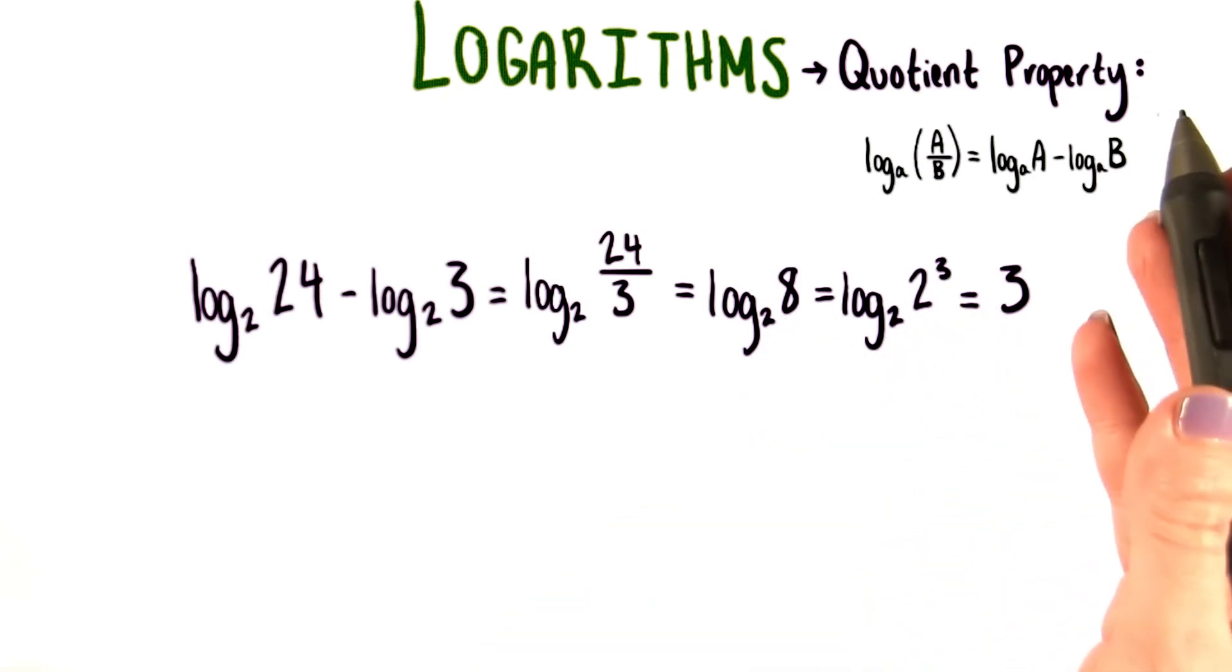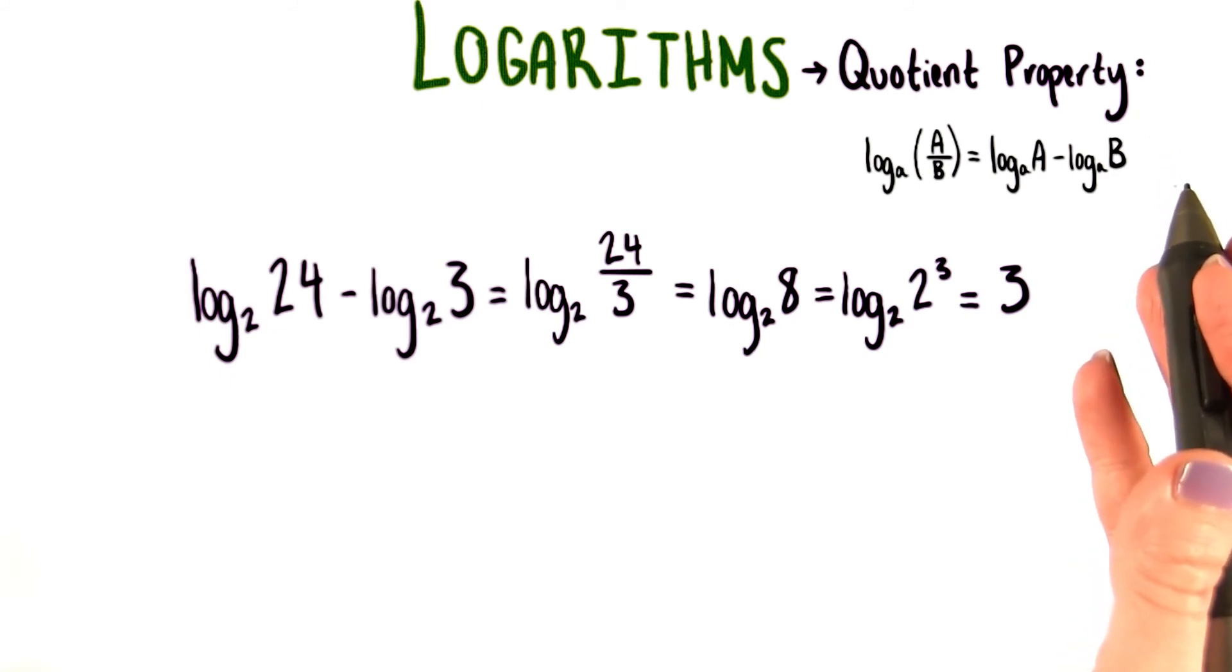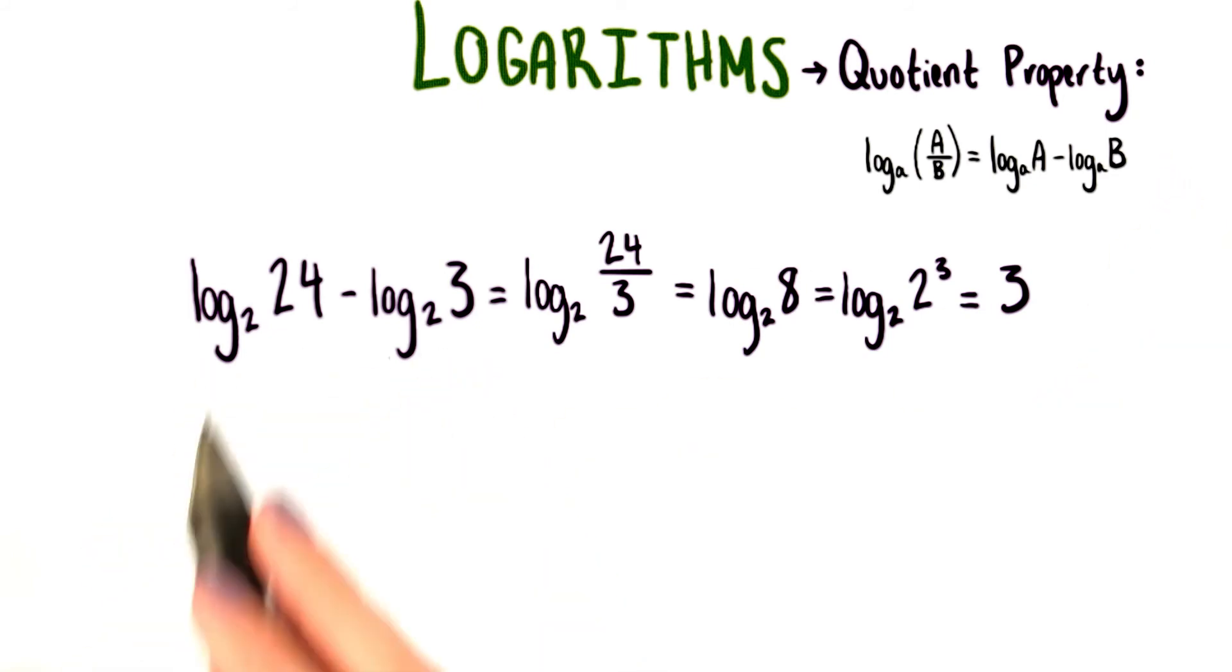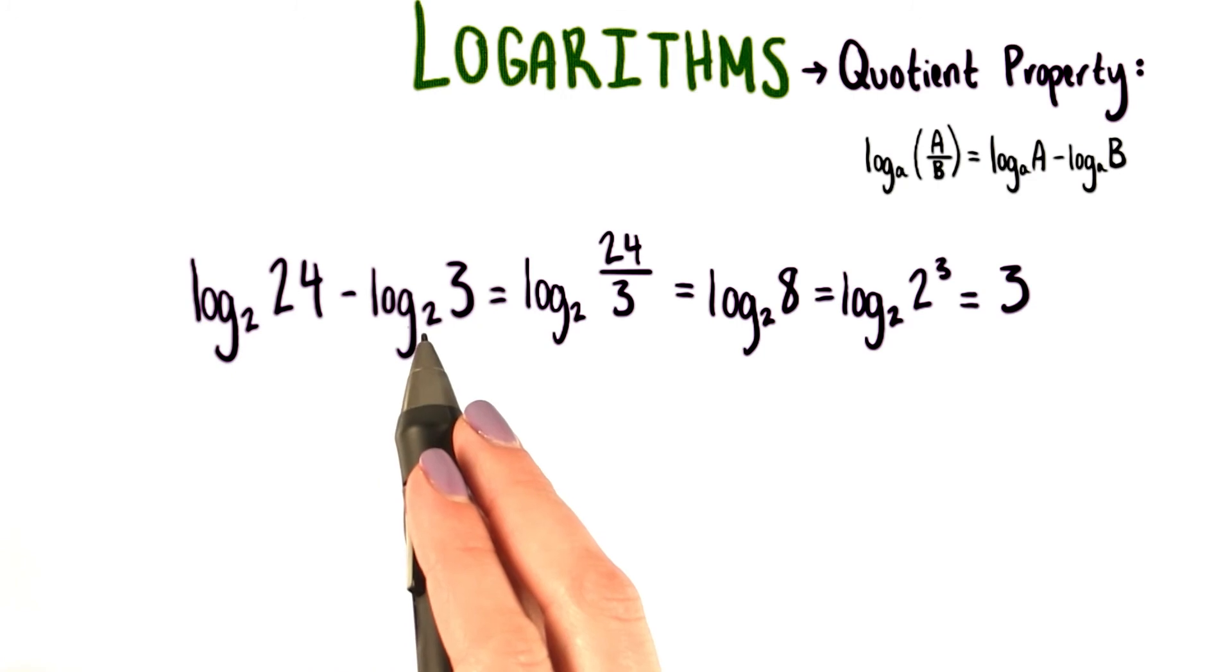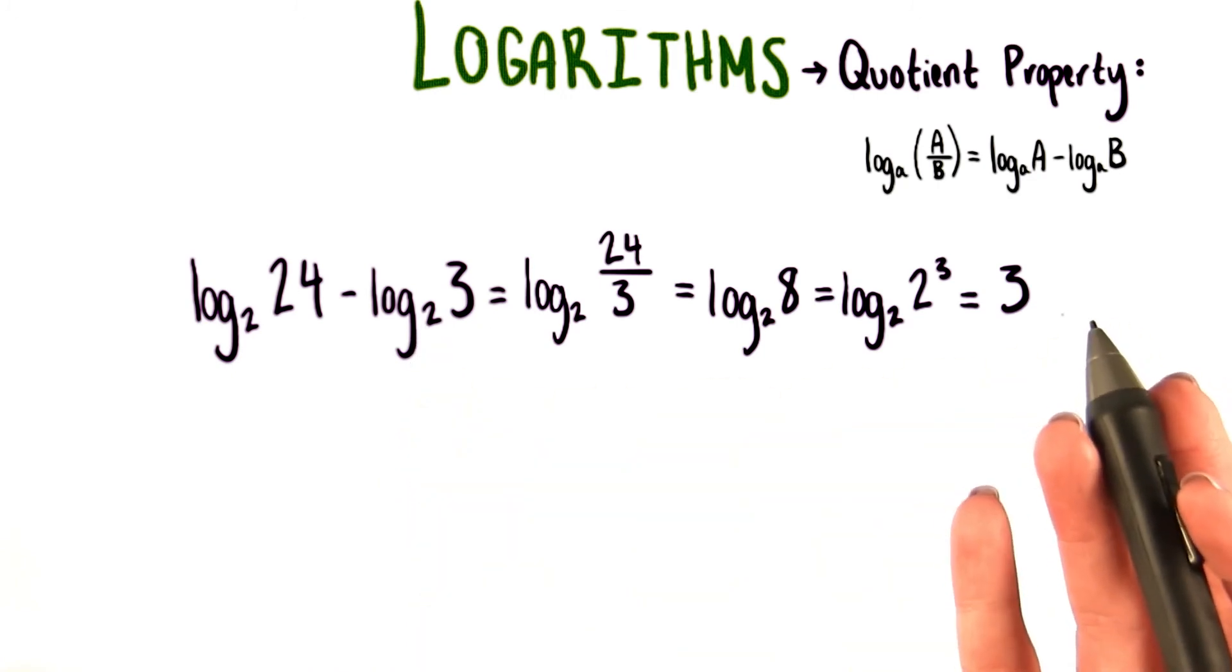There we go. Once again, the quotient property has seriously helped us simplify a log expression. Instead of log base 2 of 24 minus log base 2 of 3, we just have the number 3.